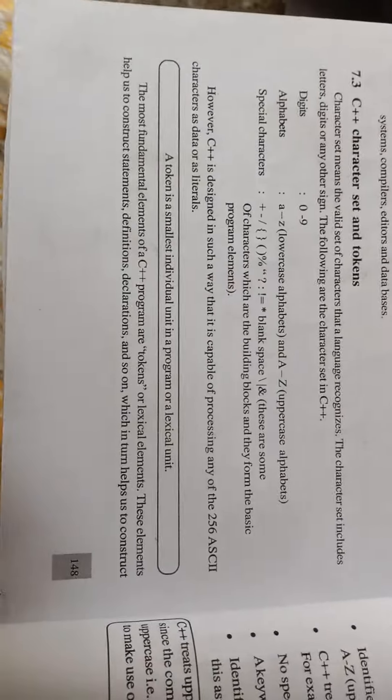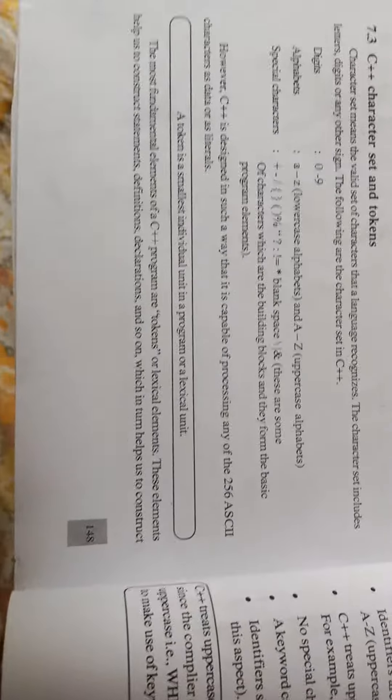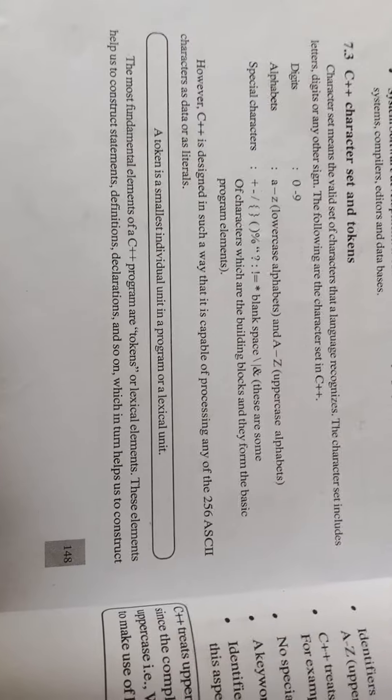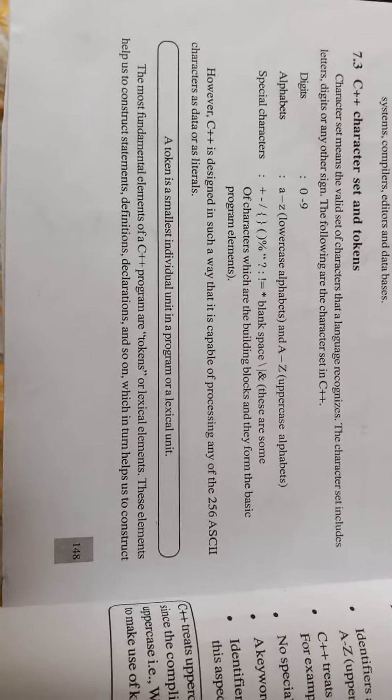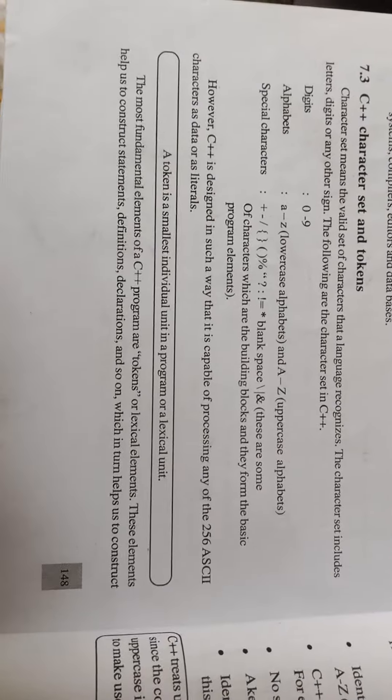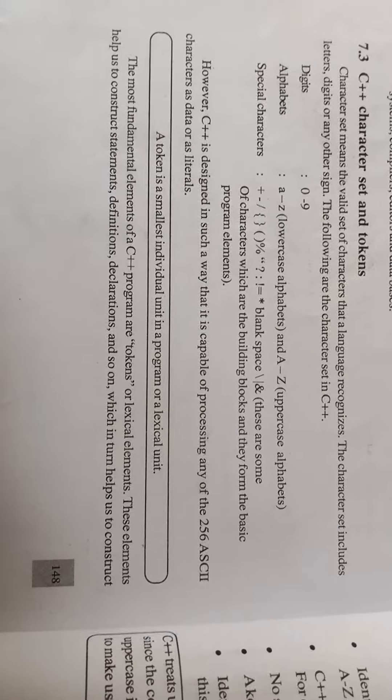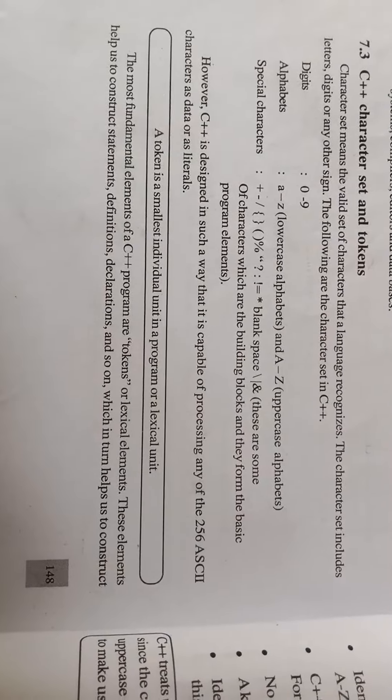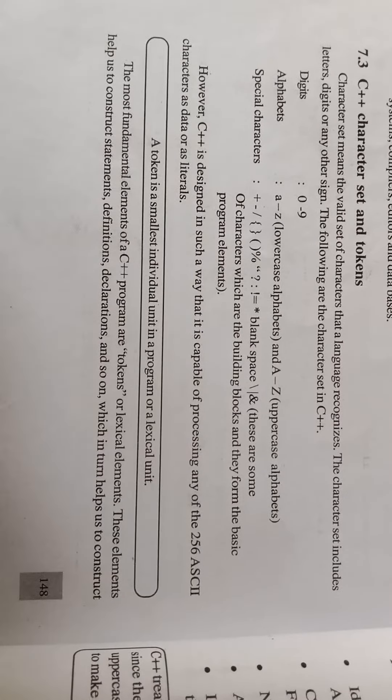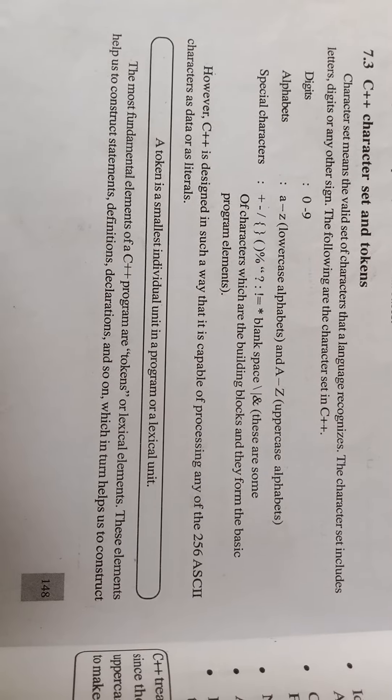C++ character set and tokens. Character set means the valid set of characters that the language recognizes. The character set includes letters, digits, or any other sign. The following are character sets in C++: Digits 0 to 9.